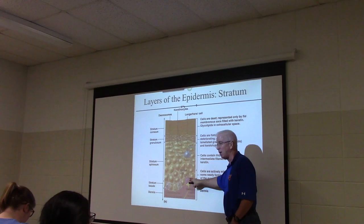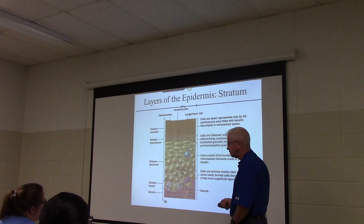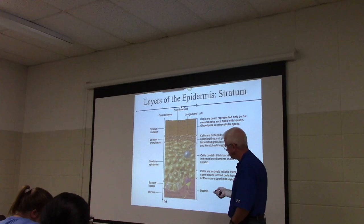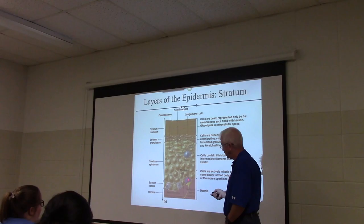All of the cells of the epidermis start at the bottom. This bottom layer is arguably the most important layer — this is where mitosis is occurring. We call this the basal layer, or stratum basale. On this basal layer is where you will find the Merkel cells connected to the nervous system — that's the touch receptor.